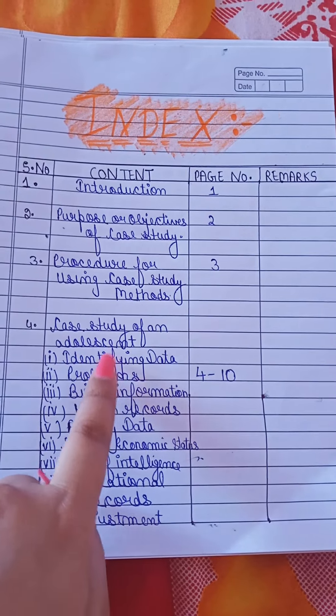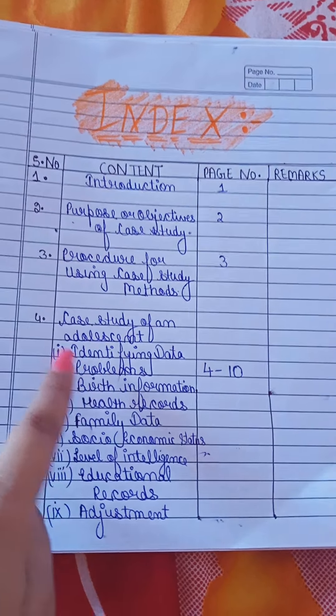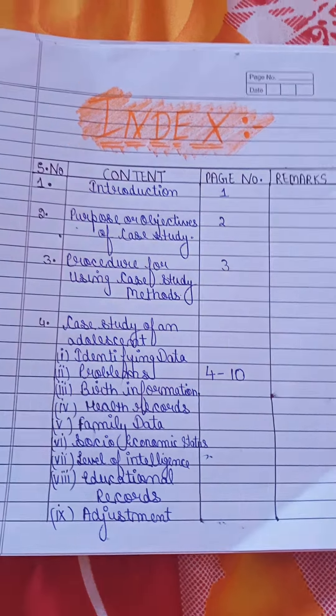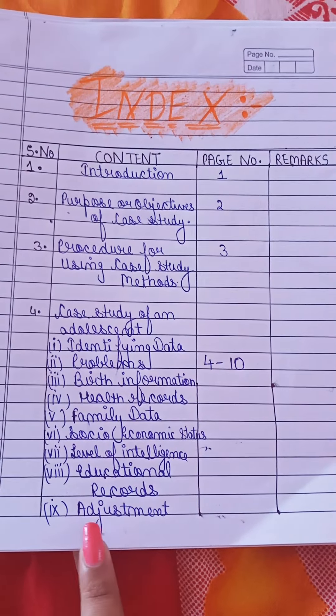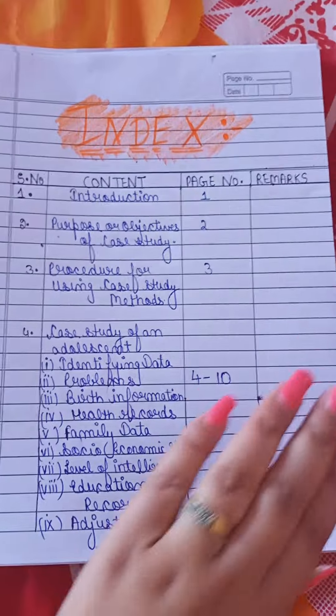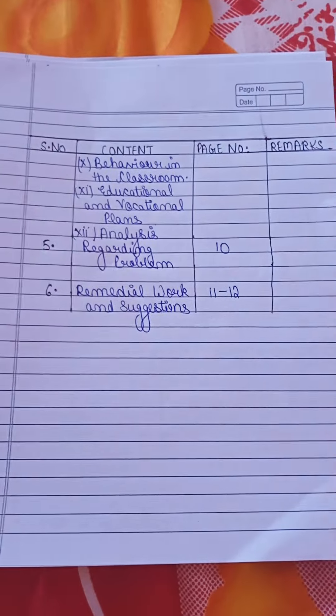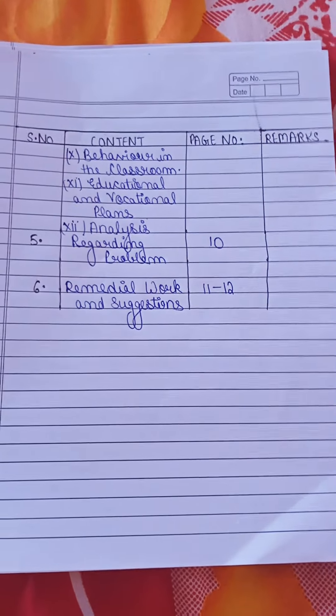The fourth chapter is the case study of an adolescent. If you have a particular adolescent, you take the name of a child and write all these things — identifying data. There are some questions in the data: some problems, what is actually the disability, birth information, health record, family data, social economic status, level of intelligence, educational records, and adjustment.